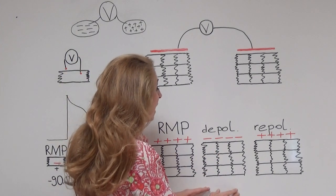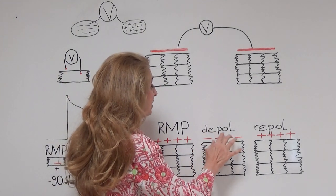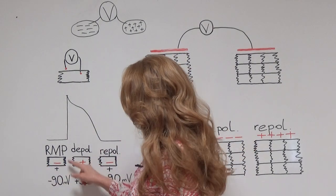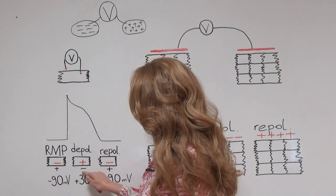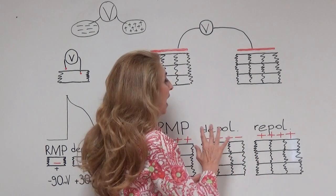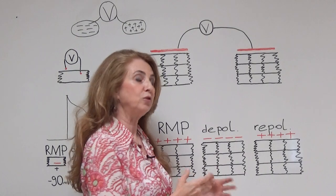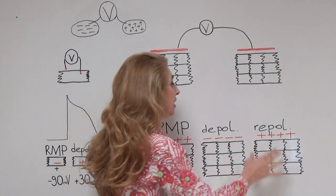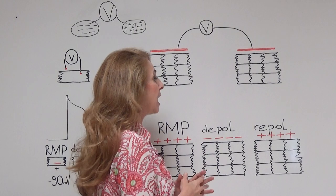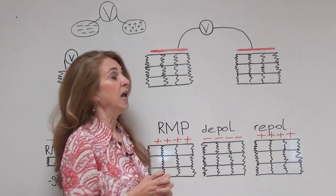When depolarization happens, the cells are charged negatively on the outside. When the cells repolarize and go back to the resting membrane potential, the outer side of the cells is charged positively again.